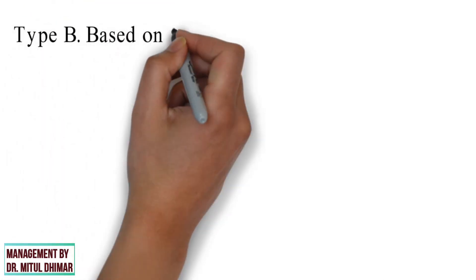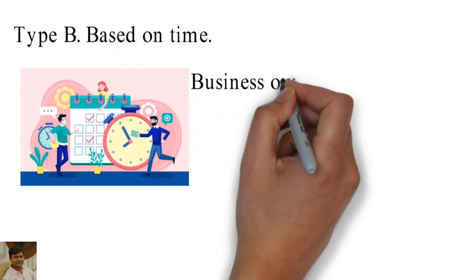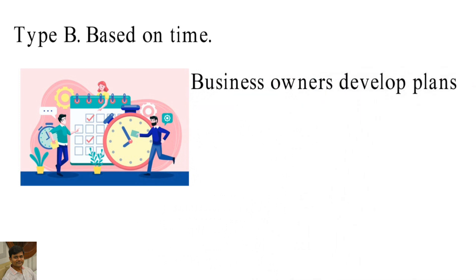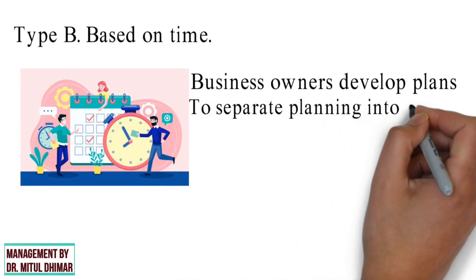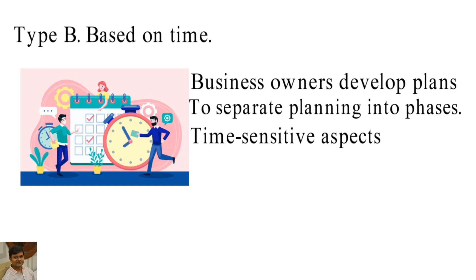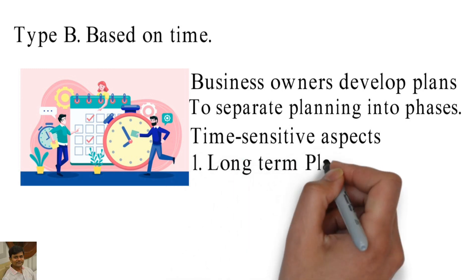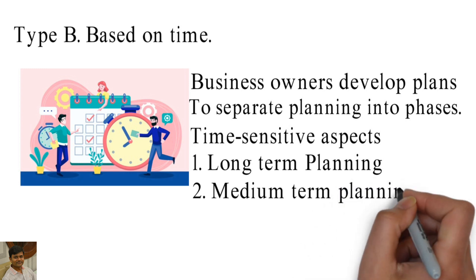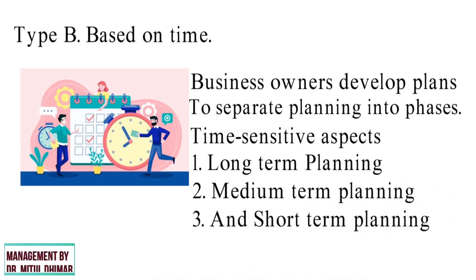Type B: based on time. Business owners develop plans to achieve their overall objectives and generally find it useful to separate planning into phases. The different periods of the planning process focus on time-sensitive aspects of the company's structure and environment. Three types of planning can be distinguished based on time: long-term planning, medium-term planning, and short-term planning.